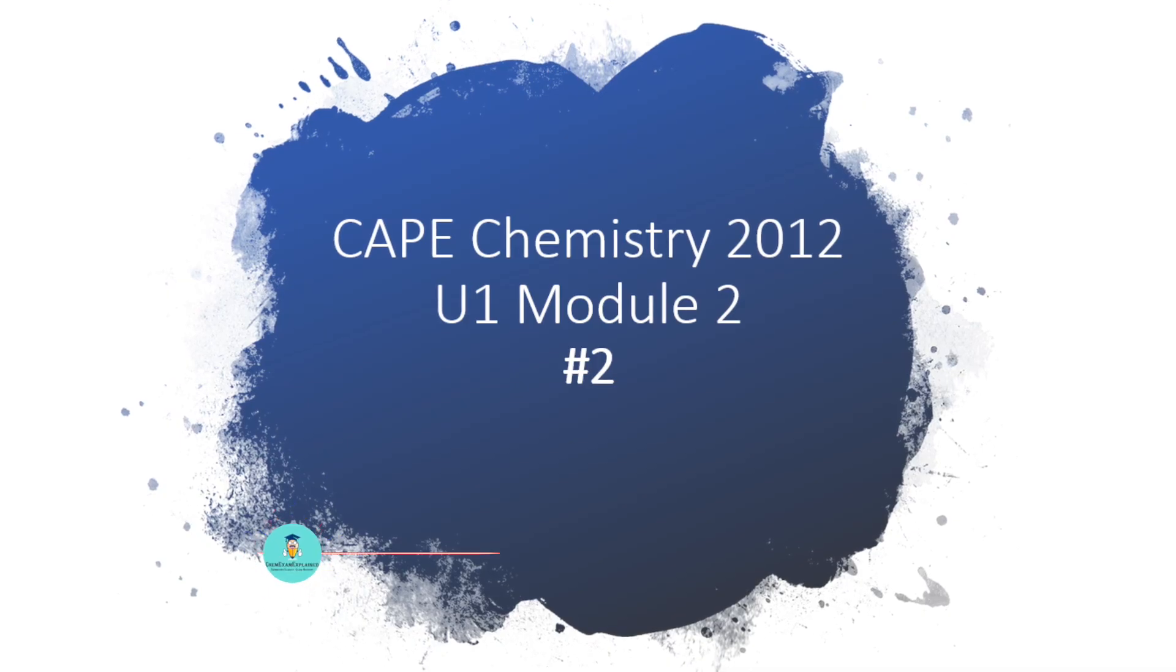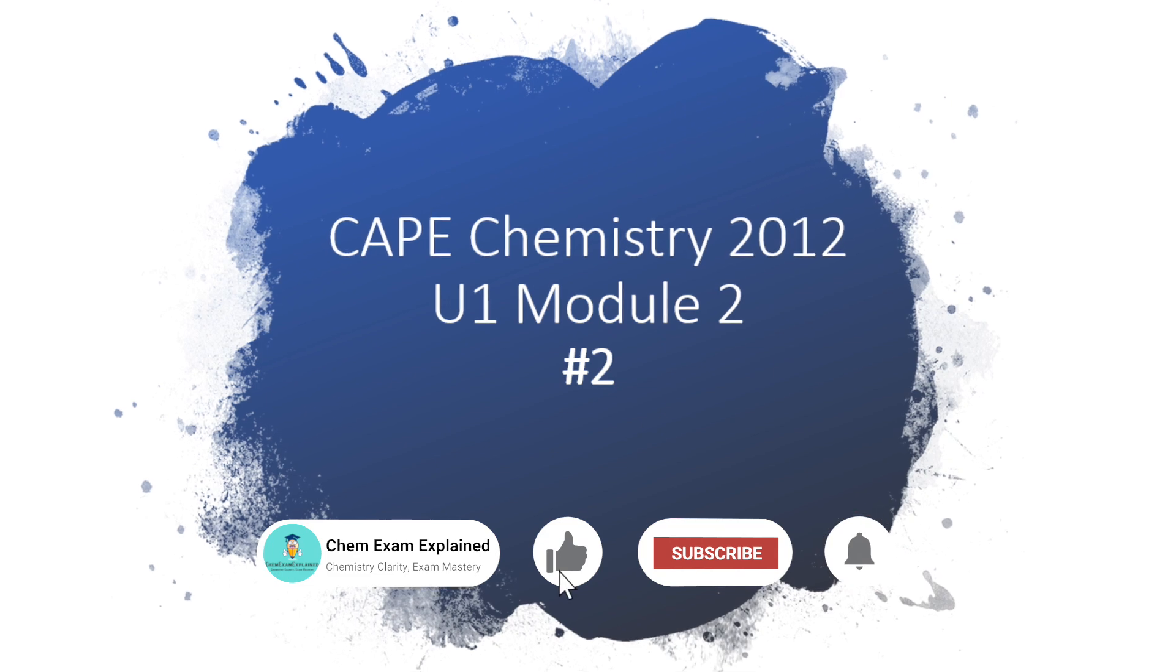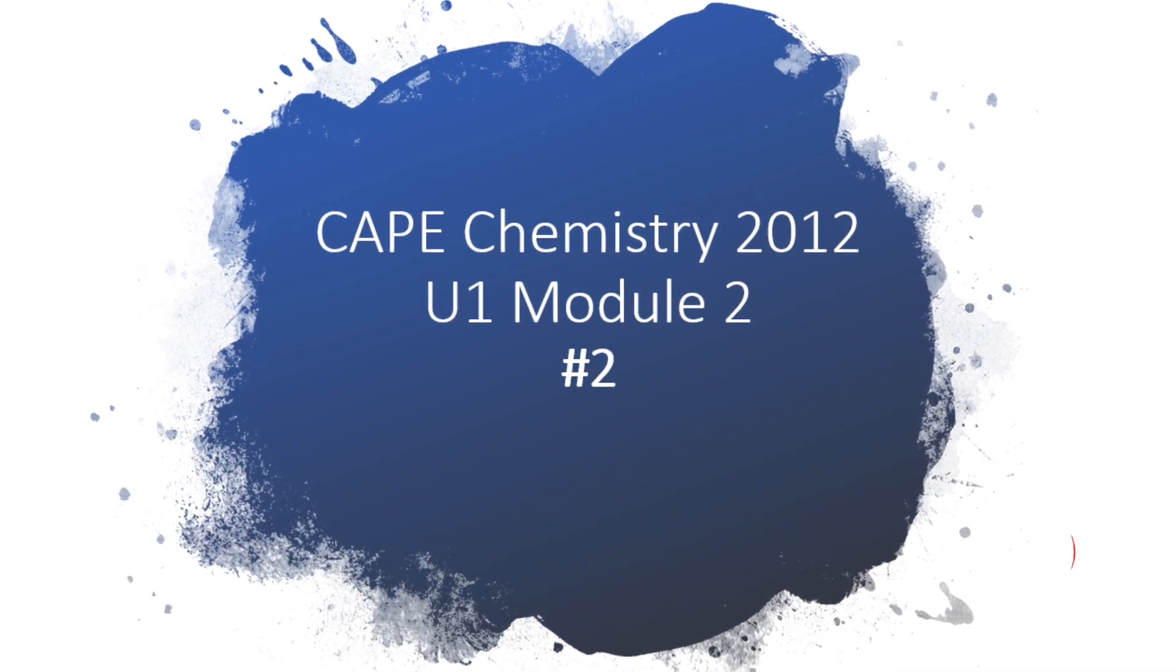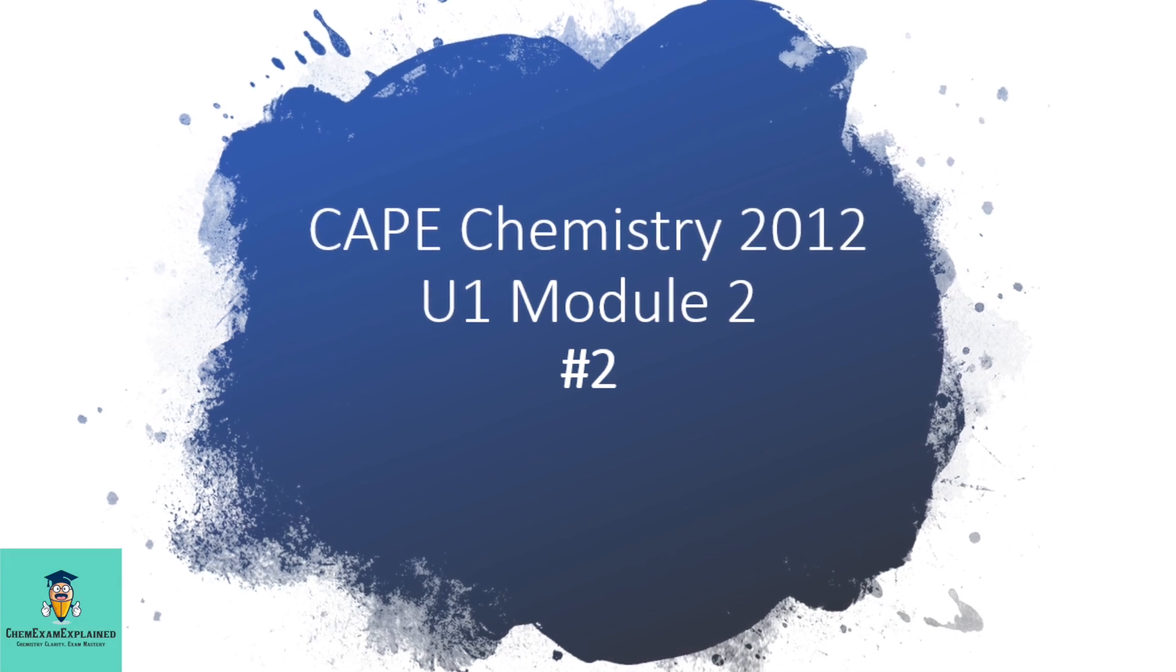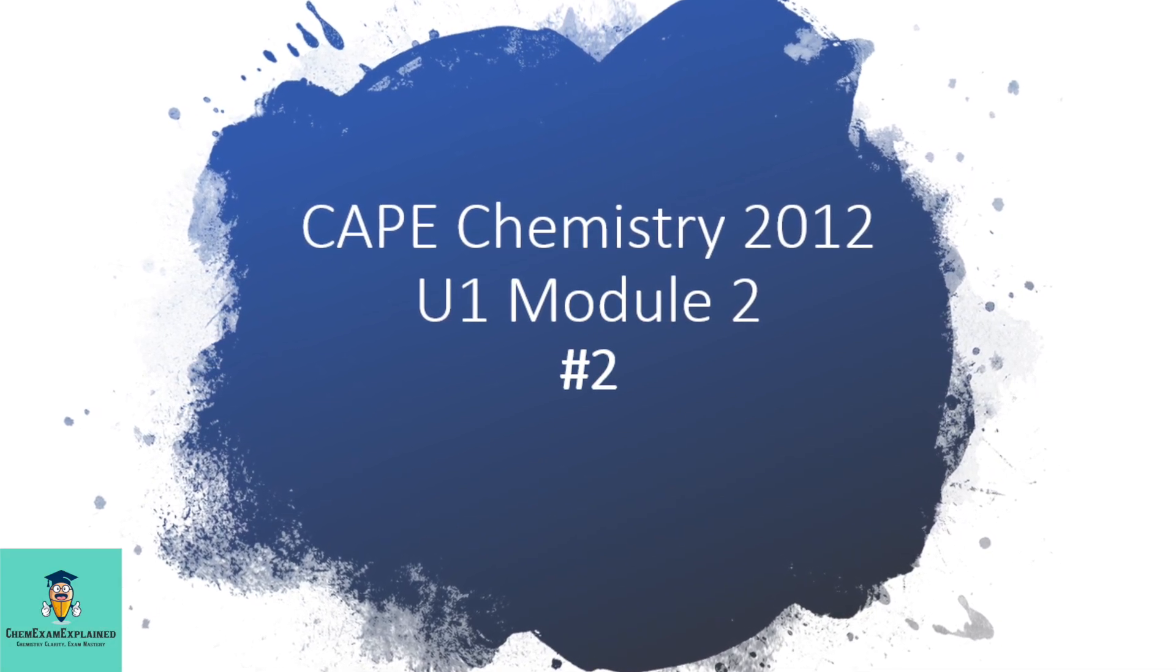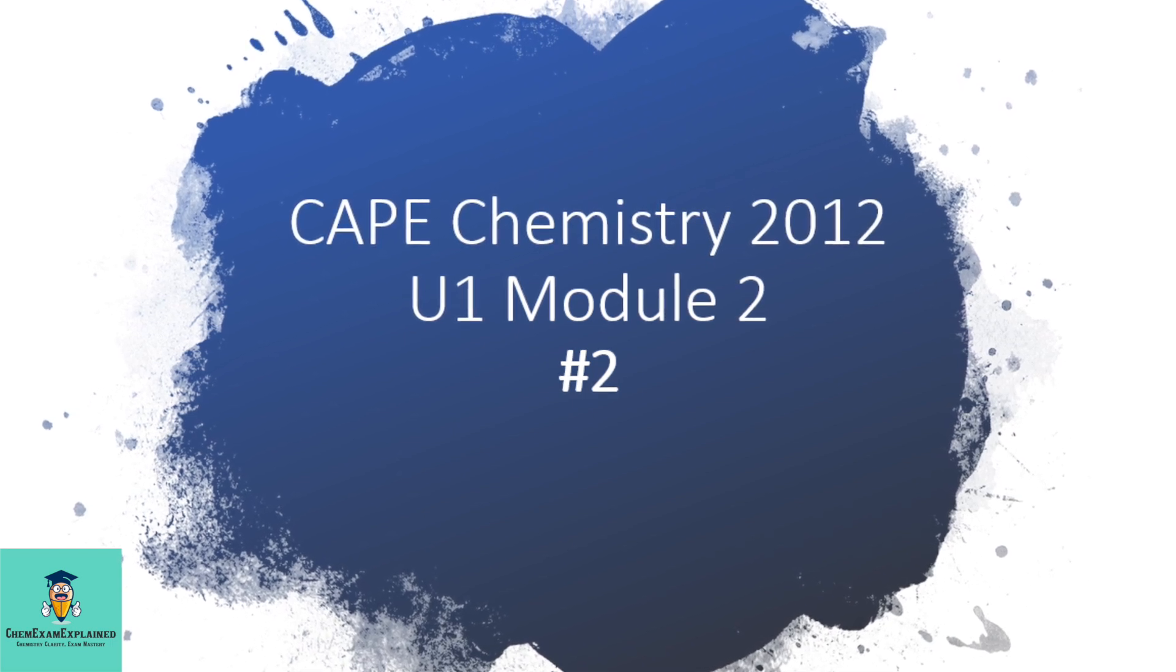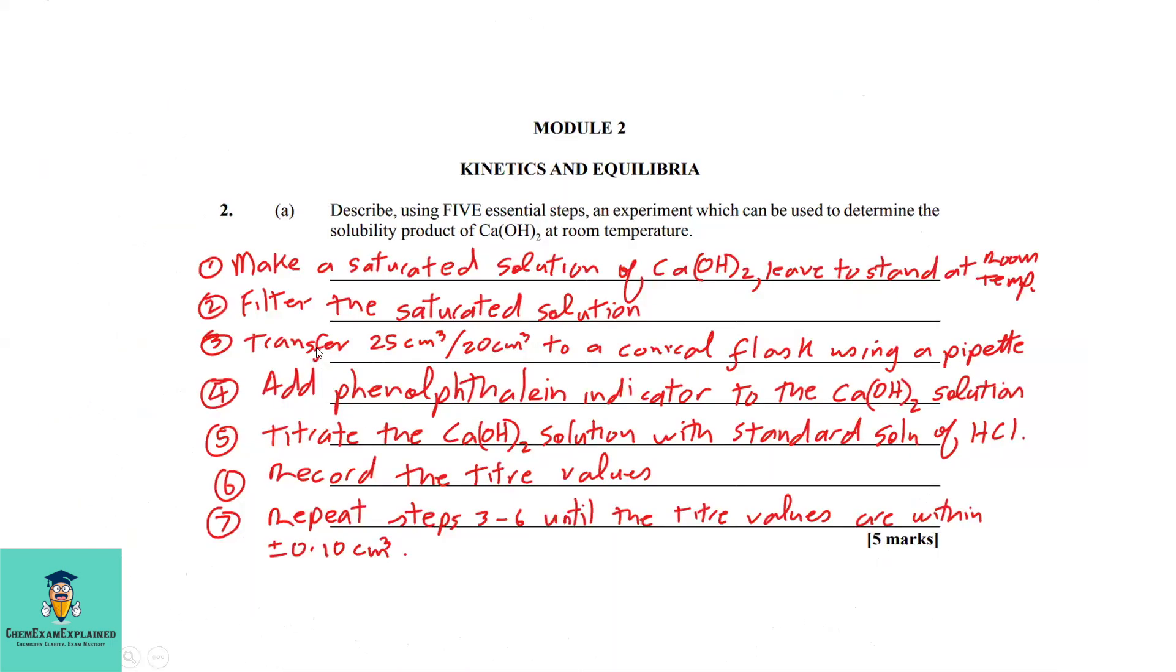Welcome back to Chem Exam Explained, where the aim is chemistry clarity and exam mastery. In today's video, we will be looking at Chemistry Unit 1, 2012, number 2: Kinetics and Equilibria. Question 2a: Describe using five essential steps an experiment which can be used to determine the solubility product of calcium hydroxide at room temperature.